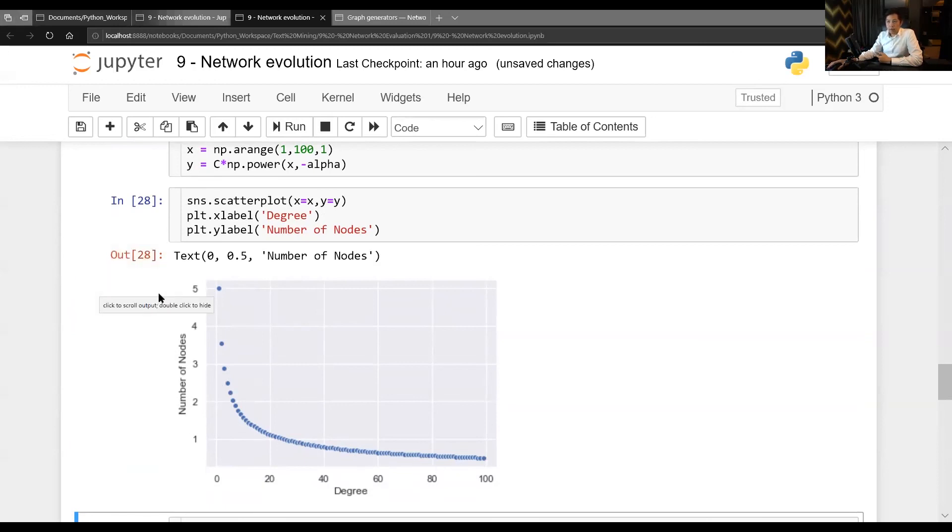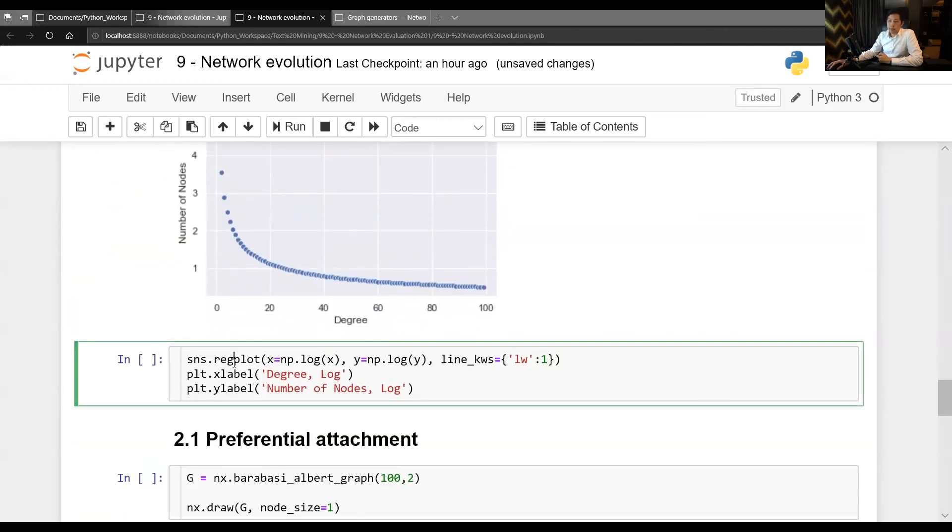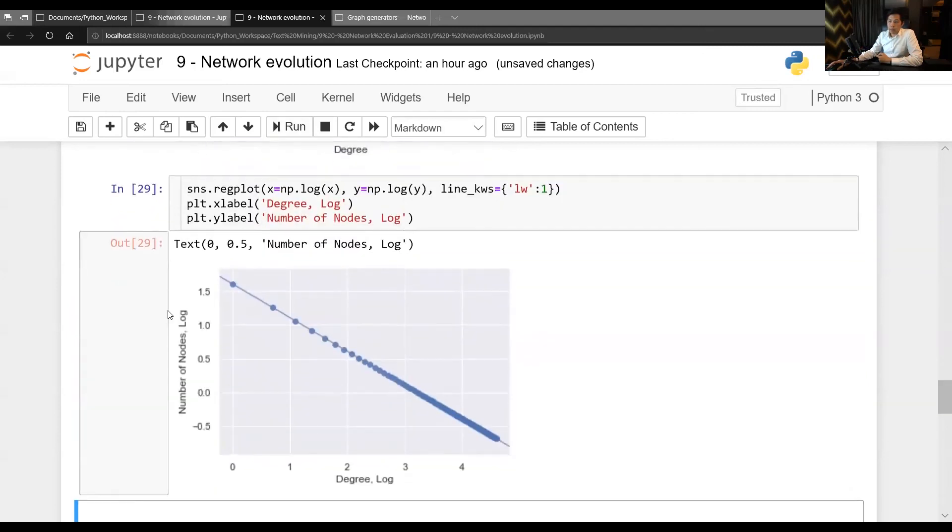And if I use this X and Y and then transform it using log scale and then plot it as the regression plot, what I got would look like this one. That is, the relationship in the log scale would be linear in nature.